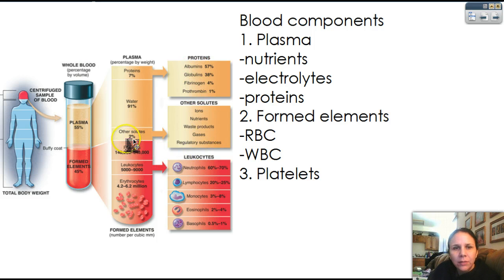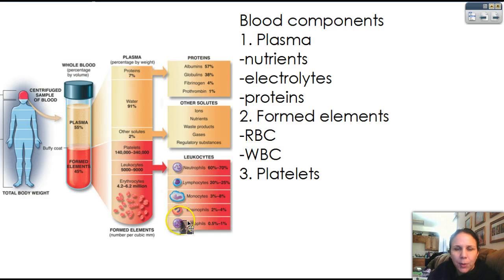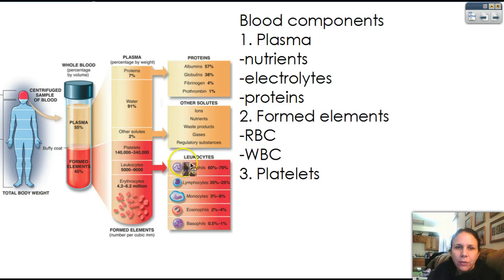Down here, we see we have platelets, and remember that's the third category there, but they're put in the formed elements because they're actually just broken down blood cells. Then we have our leukocytes, our white blood cells, and we have five different types of white blood cells. There's this really fun thing to help you remember how many of them there are. We have neutrophils, lymphocytes, monocytes, eosinophils, and basophils. If you look at the first letter of each one, it's 'never let monkeys eat bananas.' And that's how we remember the category of each one.